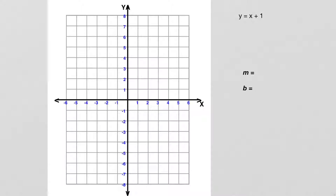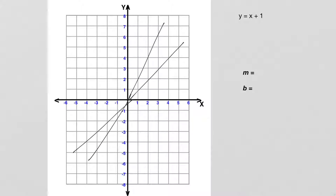Slope is a pretty straightforward concept. Essentially, what slope means is how steep is the line. We're going to draw a couple of lines here. It seems pretty straightforward that this line is steeper — if we think about a hill, this is a steeper hill we're going up. This one's not as steep, and this one's even less steep. The steepness is what's known as the slope. This has the greatest slope, this has a medium slope, and this has the least slope.